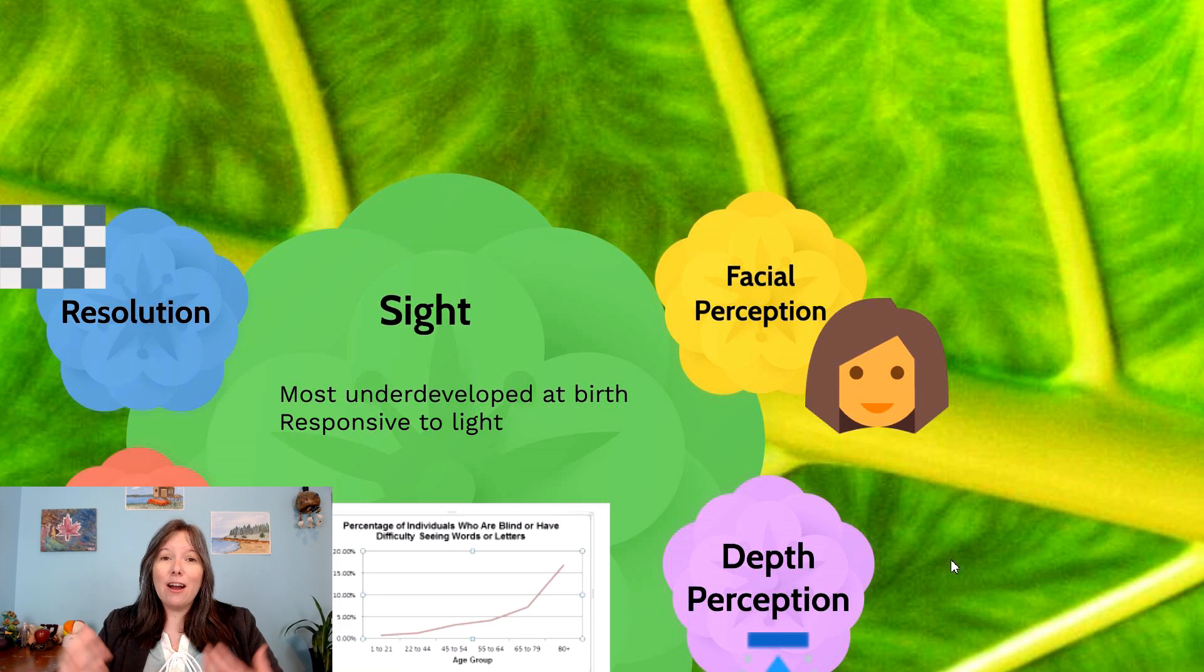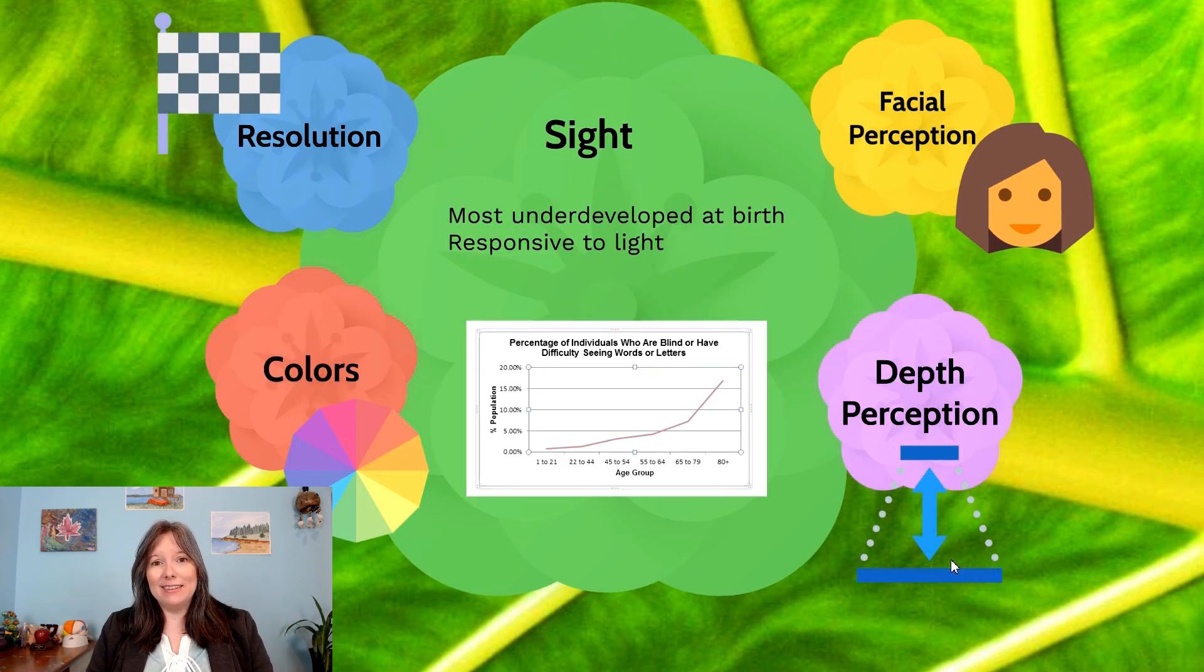Now our last sense is arguably our most advanced sense as humans, but it's also the most underdeveloped at birth, and that is our vision or our sense of sight. So we know that infants when they're born are of course very responsive to light, but they look different for a number of different ways.